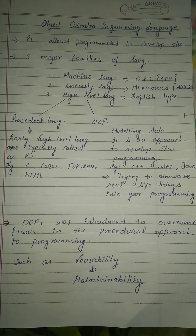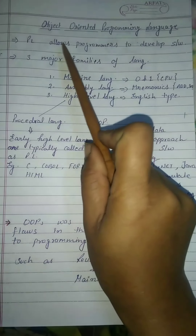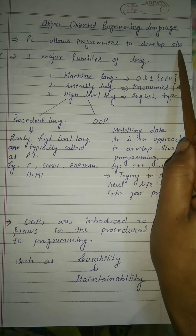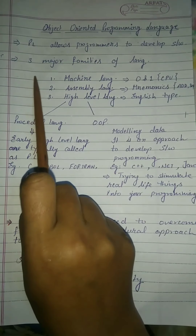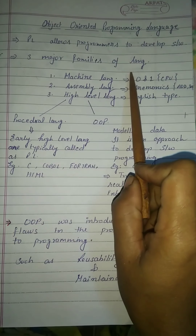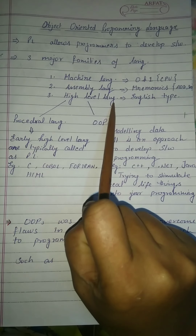Whatever programming language you choose, based on your requirement you can select different types of programming languages. Programming language is mainly to allow programmers to develop software. There are three major families of languages: machine language, assembly language, and high-level language.